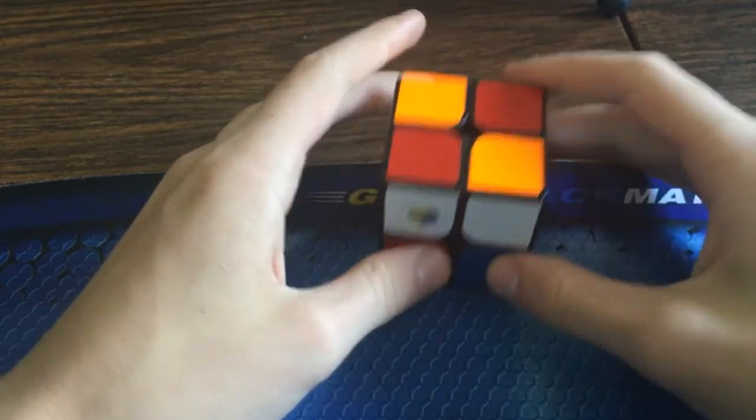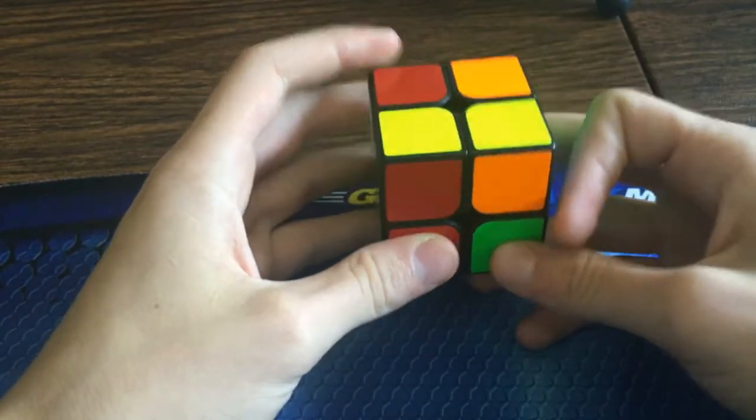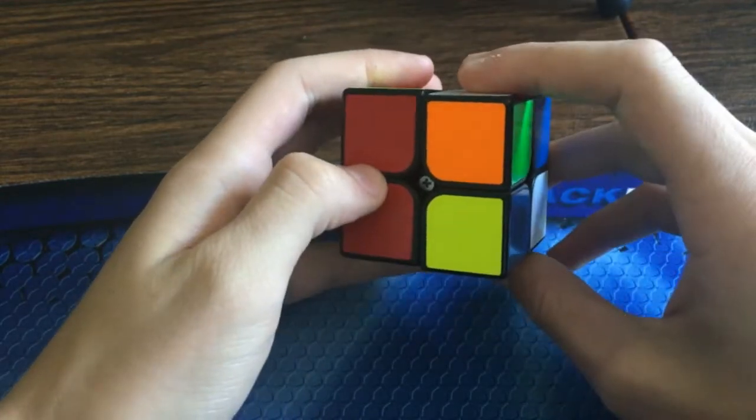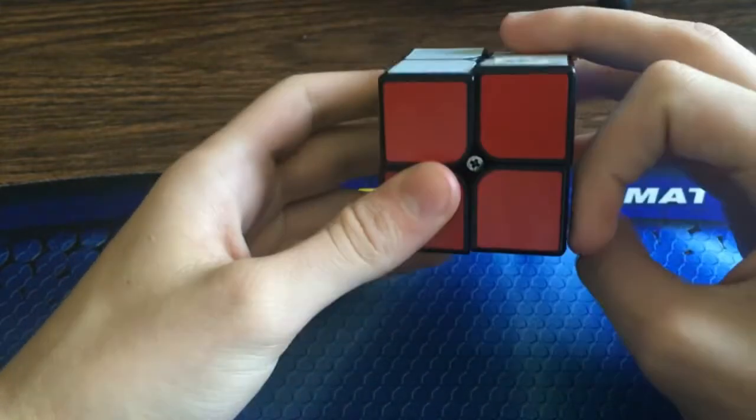You start with a U' to set it up, and then it's R2 U, and then sledge: so R' F R F', and then U R' to finish it off.